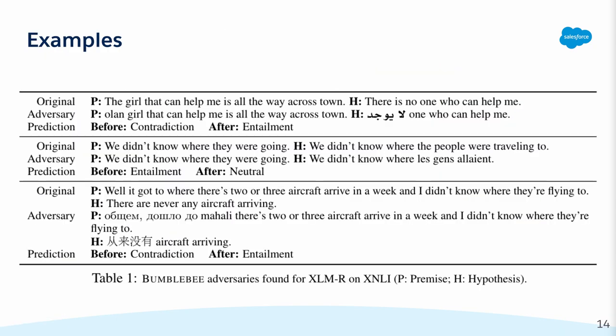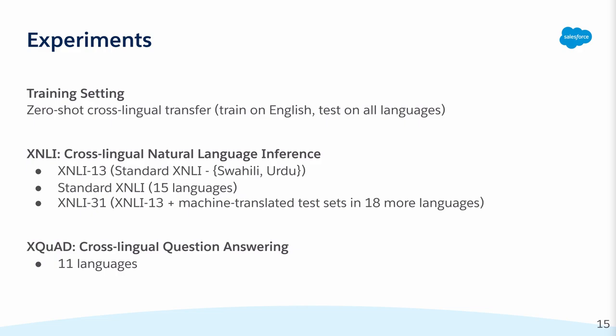Here are some adversarial examples generated by Bumblebee. We use the zero-shot transfer setting to evaluate the efficacy of our attacks and the robustness of existing multilingual models. We perform our experiments on two popular high-level tasks, NLI and QA. For XNLI, we use three different sets of languages since we did not have the bilingual dictionaries for two of the languages in the original test set.